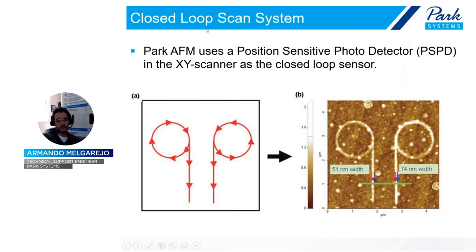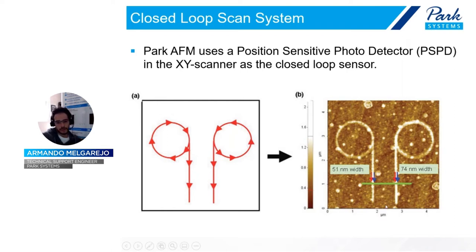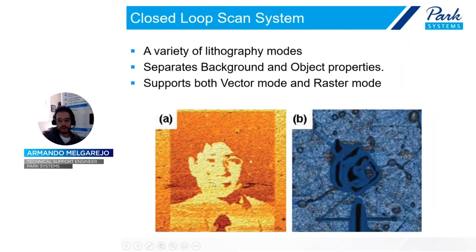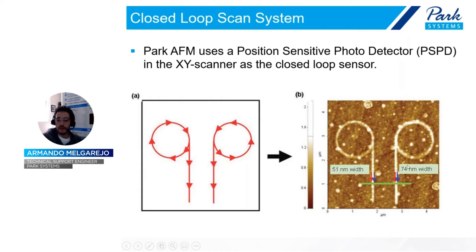Park Systems uses a closed-loop scan system. Specifically, Park Systems uses the PSPD photo detector in the X-Y scanner as the closed-loop sensor. This allows us to move in a vector movement instead of a raster movement. Normally, all AFM techniques work in a raster scan — scanning left to right across the entire image, including background — which takes longer. But when doing a nanolithography process using vector movement, we go directly to the desired feature, tracing just the circle, then the line, then the other circle. This vector movement is enabled thanks to the photo detector used as a closed-loop.